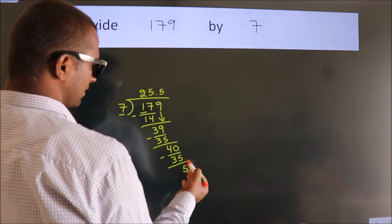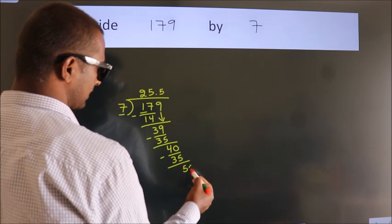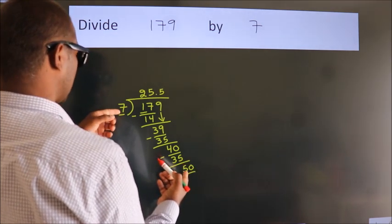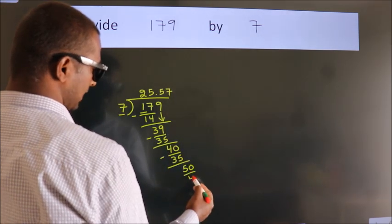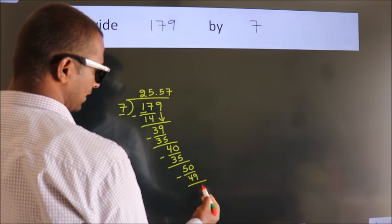After this we already have the decimal, so directly take 0. So 50. A number close to 50 in the 7 table is 7 sevens, 49. Now we subtract. We get 1.